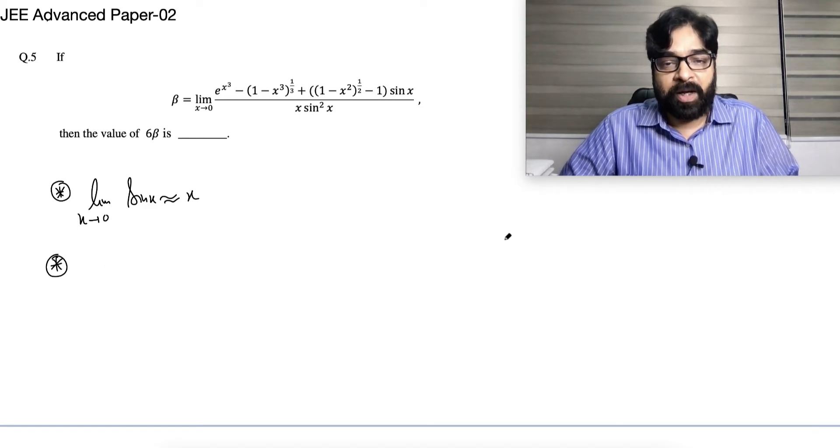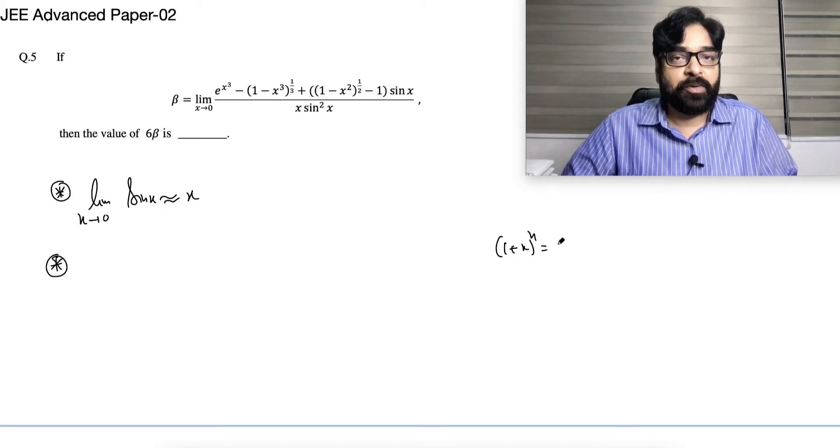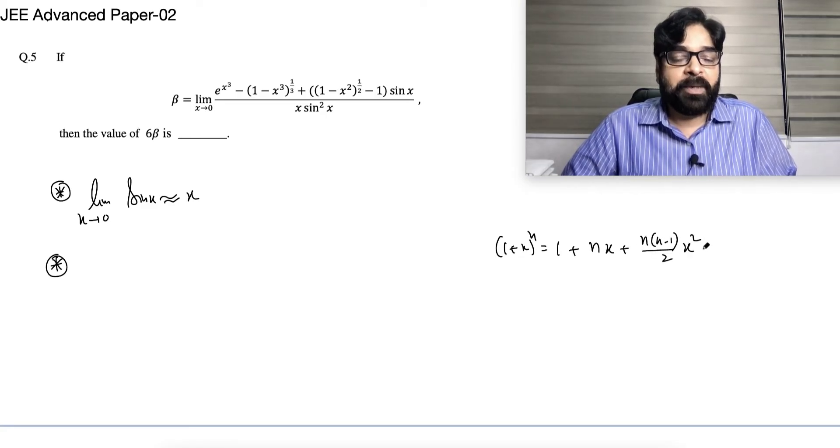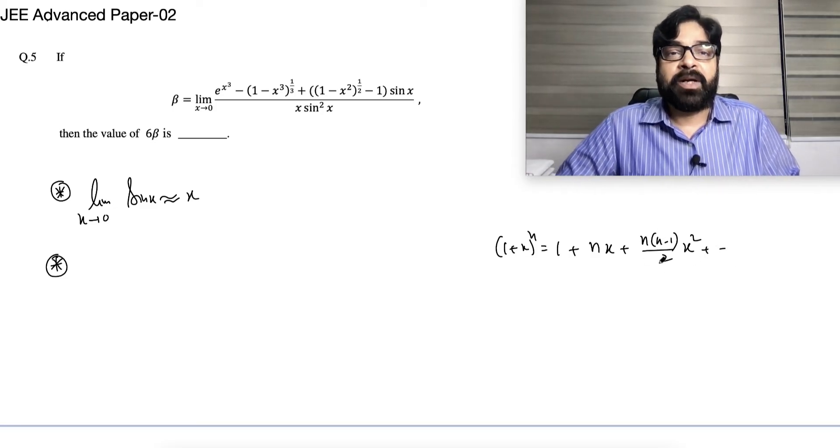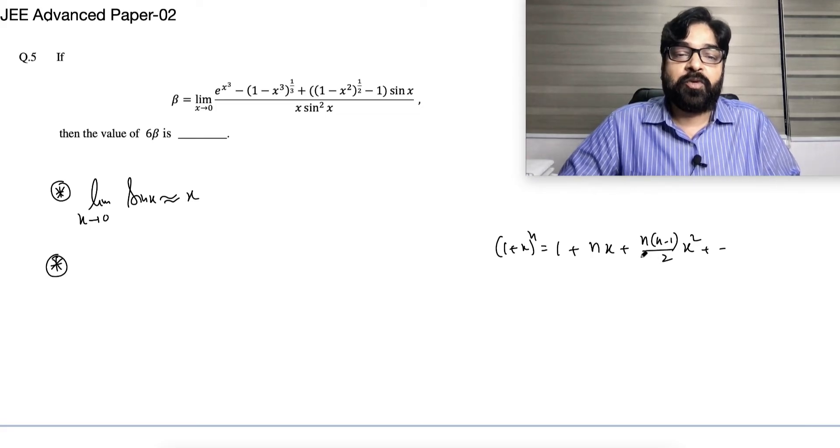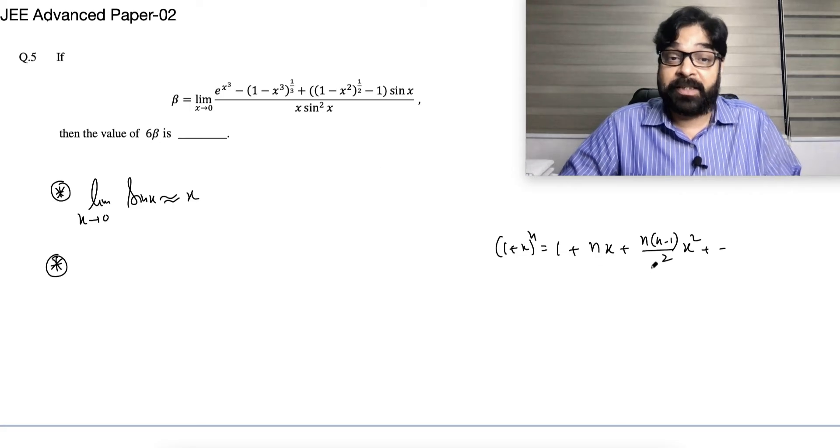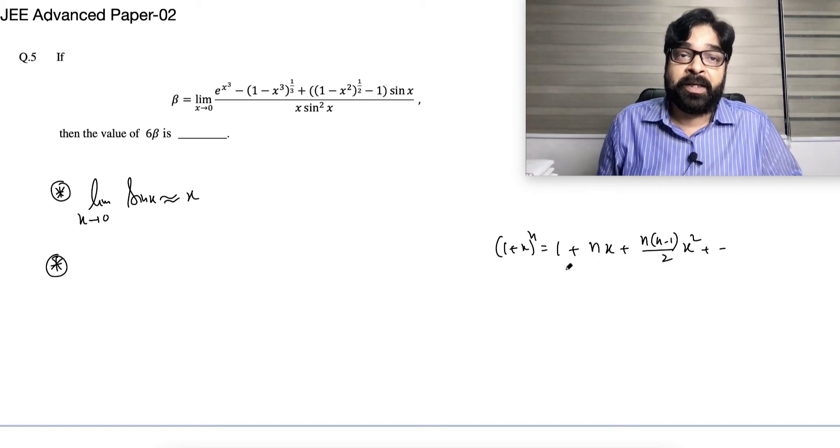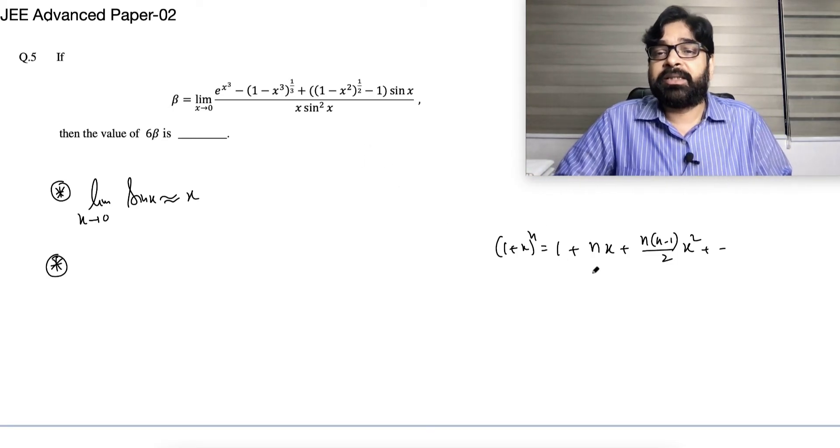And what the binomial theorem is saying, 1 plus x raise power n is equal to 1 plus nx plus n(n-1)/2 x² plus so on. I am not writing all the terms. Why I am not writing nC1, nC2? Because that is very useful in the case when power is like fraction. If nC1 I will write, I cannot use n and r as non-integer. So this part, you should know it. The rest, this question is done.